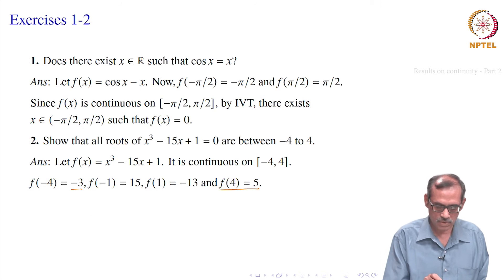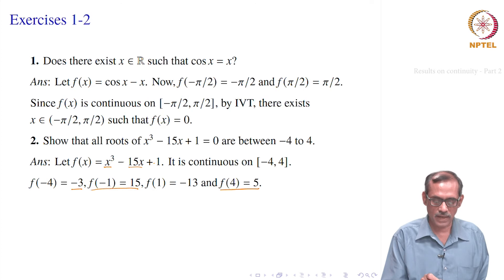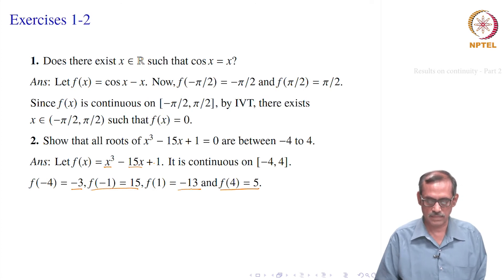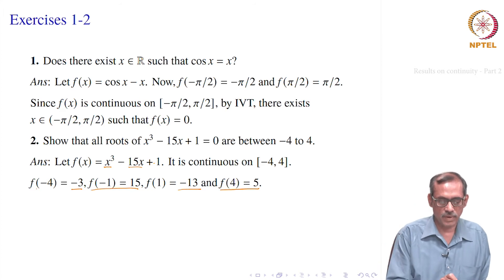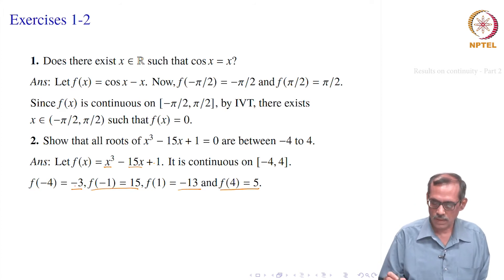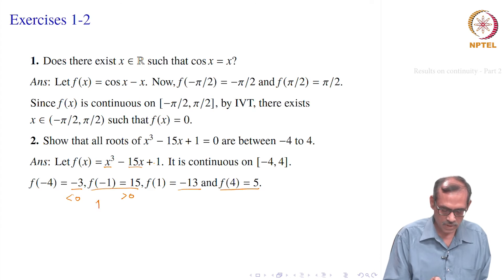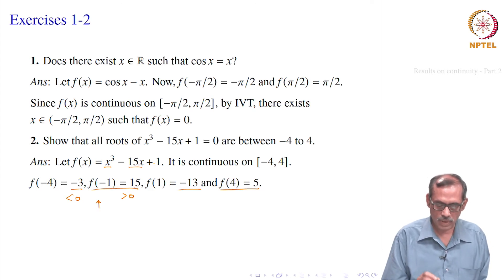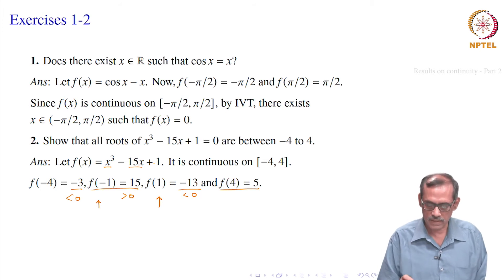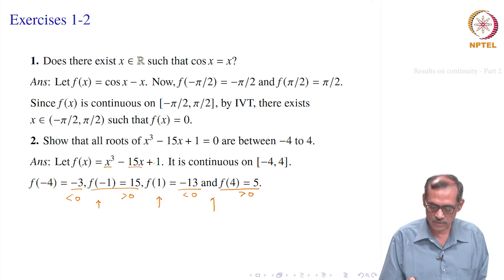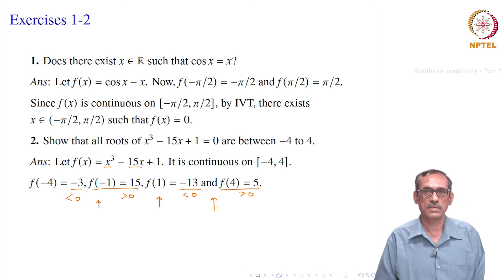We compute f(−1): substituting −1 gives −1 + 15 + 1 = 15, which is positive. And f(1) = 1 − 15 + 1 = −13, which is negative. Now: f(−4) = −3 is negative, f(−1) = 15 is positive, so there is a root in (−4, −1). Then f(−1) is positive and f(1) is negative, so there is a root in (−1, 1). And f(1) is negative and f(4) = 5 is positive, so there is again a root in (1, 4).